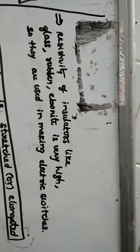Resistivity of insulators like glass, rubber, and ebonite is very high. So they are used in making electric switches — the white or cream-white switch bodies are typically ebonite-type material. They are useful in making electric switches because resistivity is high; even if you touch them, you will not get a shock.